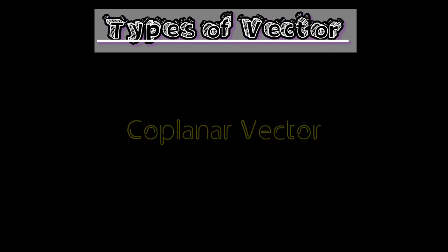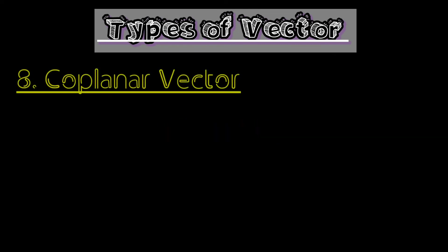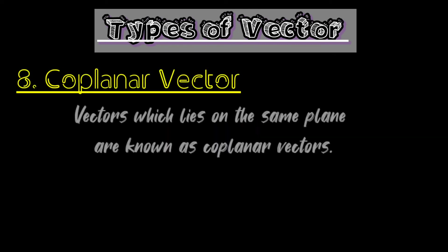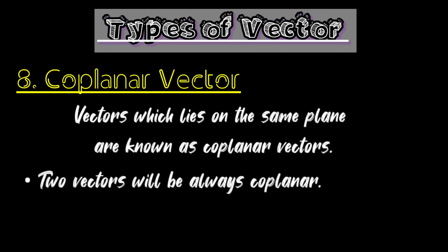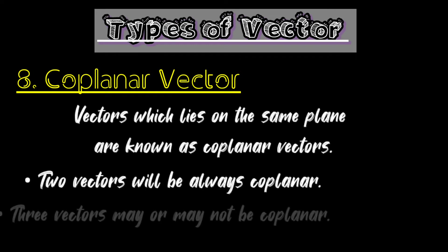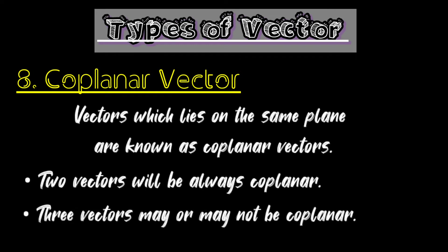Co-planar vectors: vectors which lie on the same plane are known as co-planar vectors. Two vectors will always be co-planar; three vectors may or may not be co-planar.